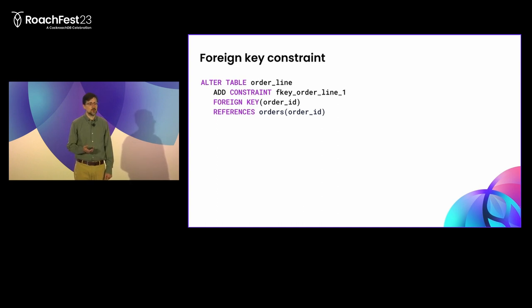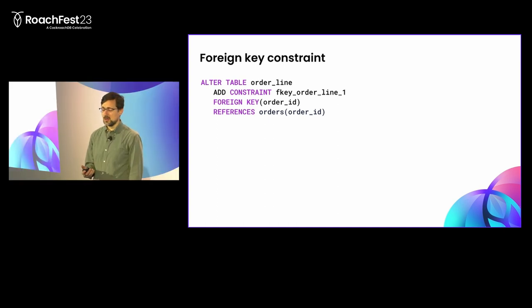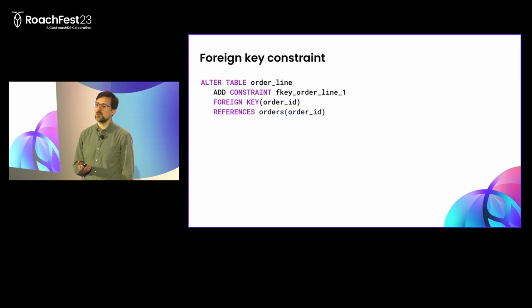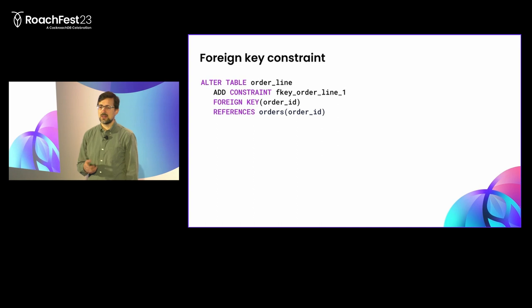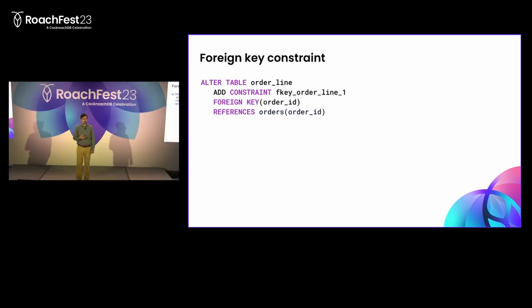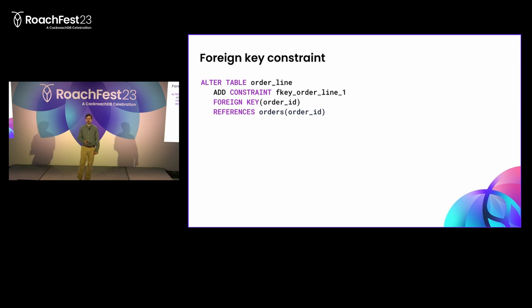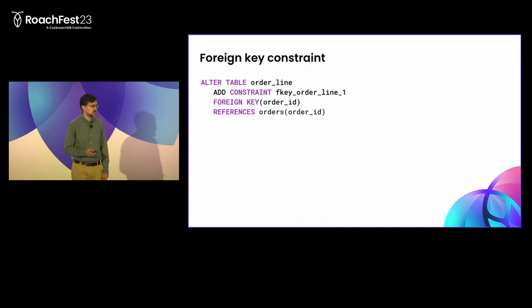I never really saw bugs that would have been prevented if we had been using foreign keys. With foreign keys being a fairly weak check, you don't get a lot of value for the extra work you're asking the database to do and the extra performance requirements. But on the other hand, there are other bugs that I have seen that could have been prevented with more application-level checks that rely on the same transactional mechanisms as foreign key constraints. Let's walk through some examples to show what I mean.